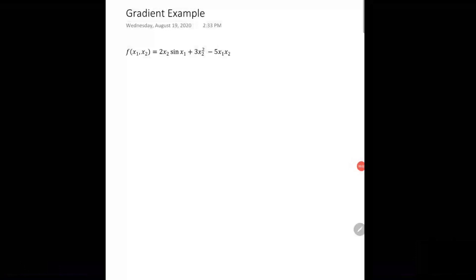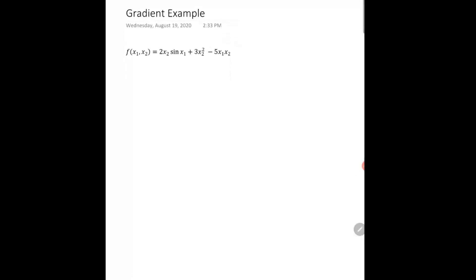Okay, let's just do a very quick example so you understand how to do a gradient. So here we have a function, which is a function of two variables, x1 and x2.